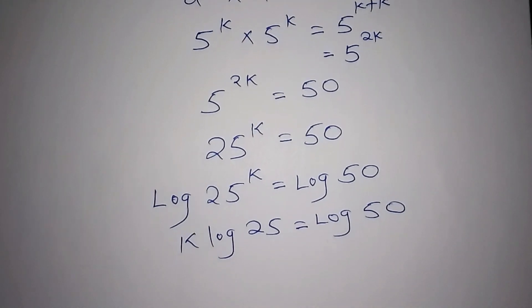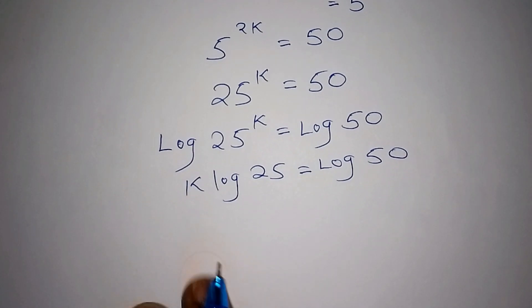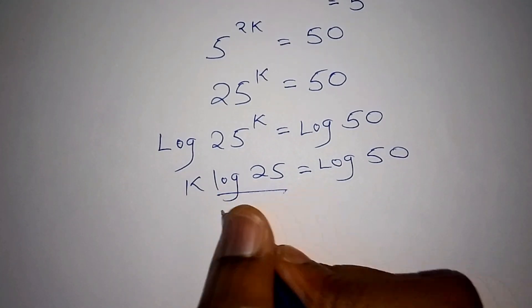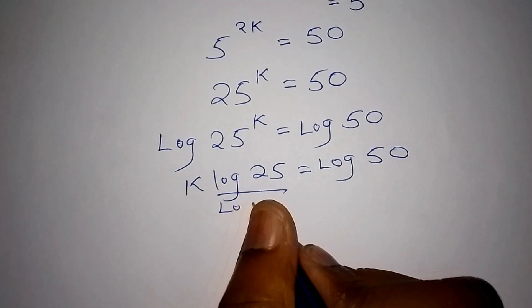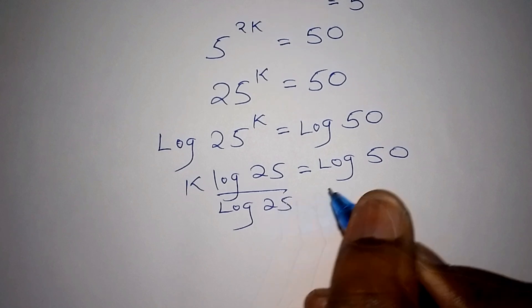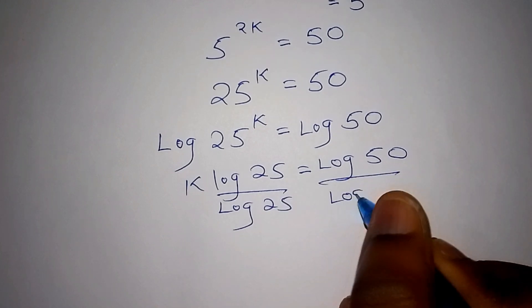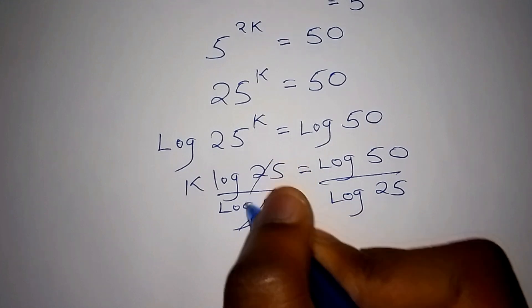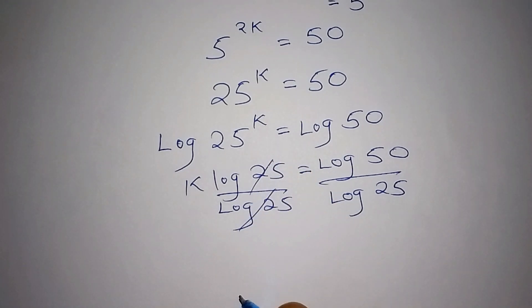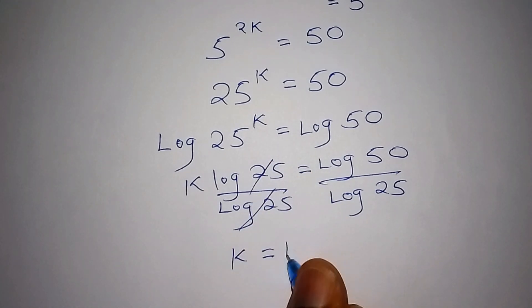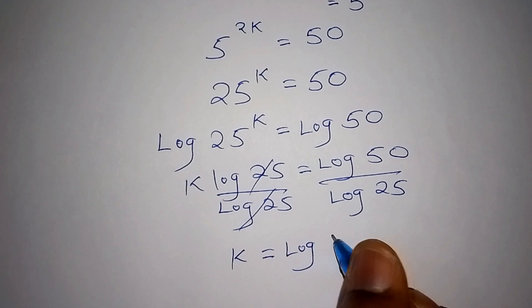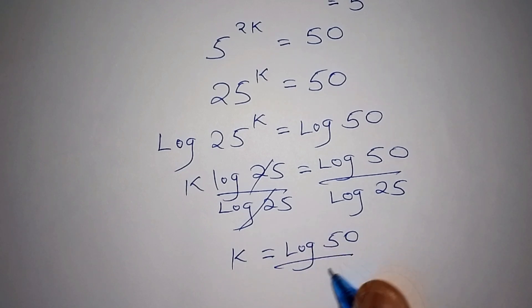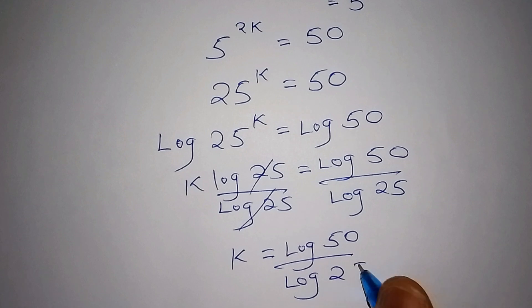From there we shall rewrite this and say: k log 25 equals the log of 50. For us to remain with k on one side, we shall divide both sides by log 25. The log 25 and the log 25 shall cancel, and we remain with k equals log 50 all over log 25.